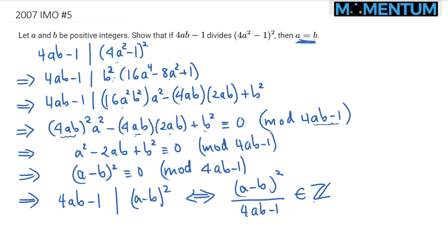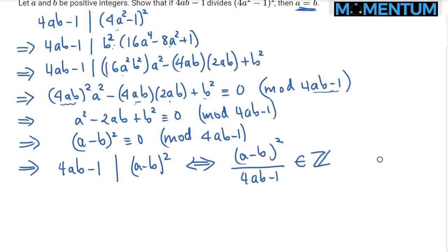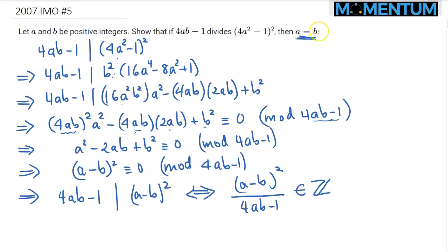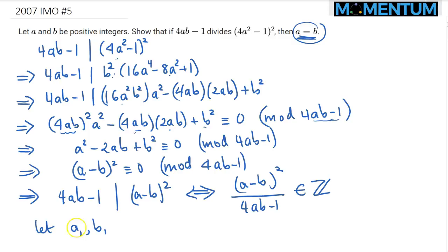And you can actually even name that integer if you want to. So that's pretty good. Now, the part where we want to show that A is equal to B: let's assume to the contrary that A is not equal to B, and without loss of generality let A be the greater one. At least there's one such solution where A is greater than B. Let's do the following. To be more specific, let A₁, B₁ be such a solution. The pair A₁, B₁ solves this for an integer. This is a standard technique — we will create an infinite descent.